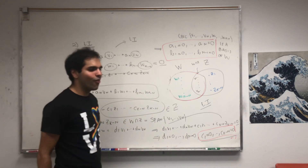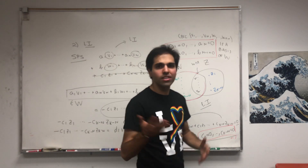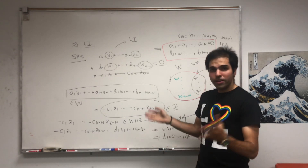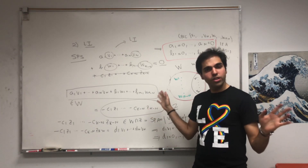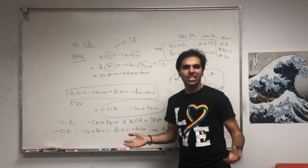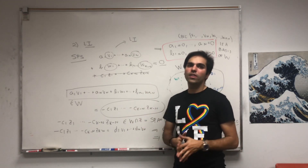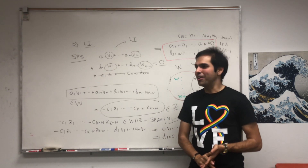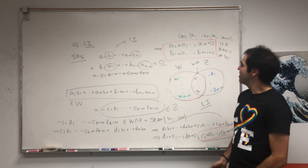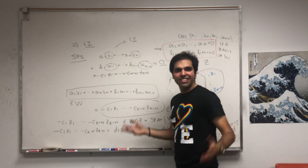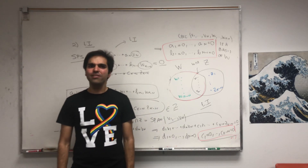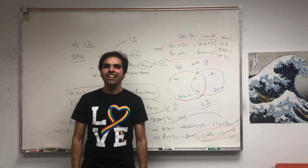Therefore we have shown that the combined set is a basis for W+Z, giving us the dimension formula: dim(W+Z) = dim(W) + dim(Z) - dim(W∩Z). In particular, if the intersection is just trivial, then the dimension of the sum is the sum of the dimensions — which happens, for example, with direct sums, which I'll have another video on if you're interested. That's it for today; if you want to see more math, please subscribe to my channel.